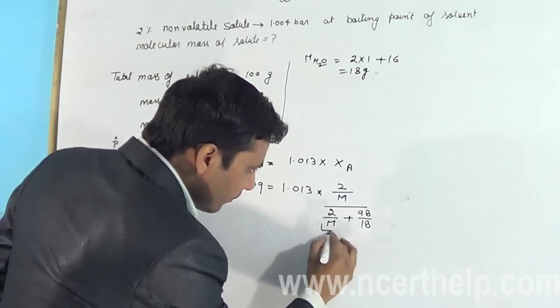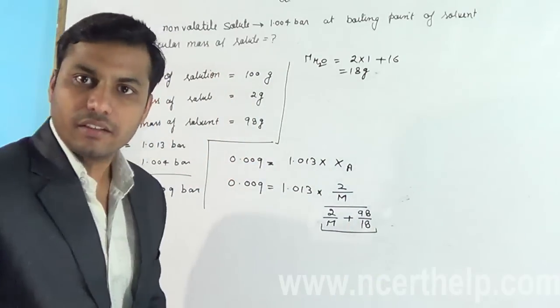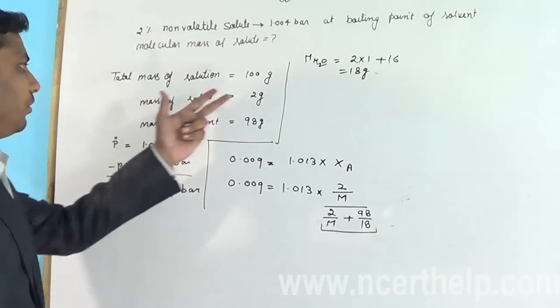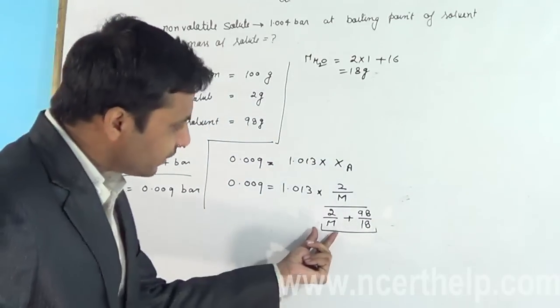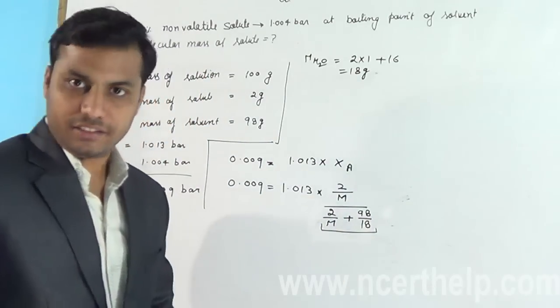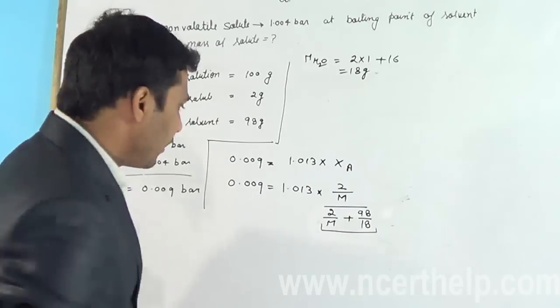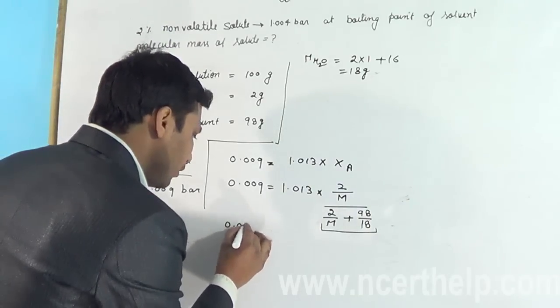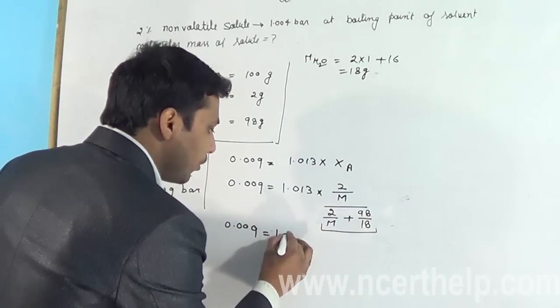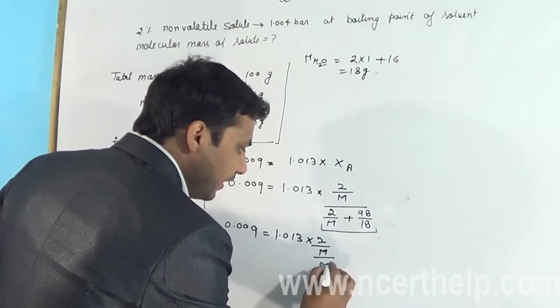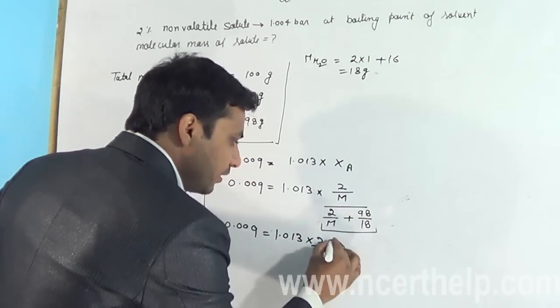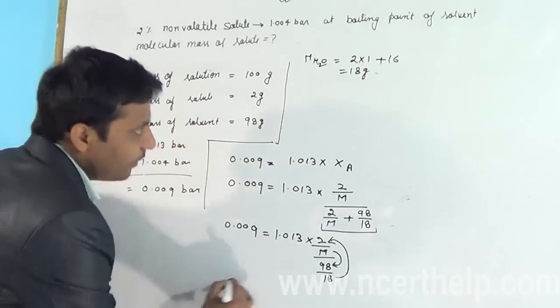Here you can see both values are addition, and the mass of solute is very small as compared to mass of solvent, so we can neglect this value in case of addition to simplify it. So we get 0.009 is equal to 1.013 into 2 by M divided by 98 by 18. This value goes up, this goes down.